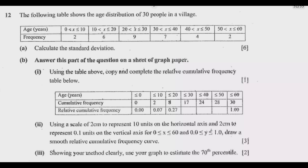The following table shows the age distribution of 30 people in a village. We have the age in years and the frequency. Part A asks us to calculate the standard deviation. Part B requires answering on a sheet of graph paper — copying and completing the relative cumulative frequency table, using a scale of 2 cm to represent 10 units on the horizontal axis and 2 cm to represent 0.1 units on the vertical axis, for x between 0 and 60, and y between 0.1 and 1, then drawing a smooth relative cumulative frequency curve and estimating the 70th percentile. This question is on statistics and I recommend choosing it because the questions remain the same and you are guaranteed good marks.